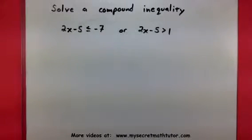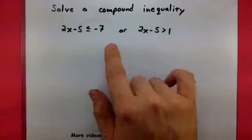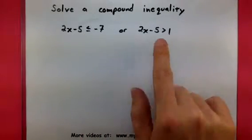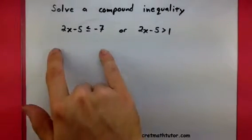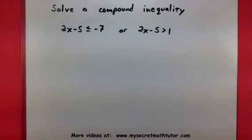Now the process for solving this is not going to look too unusual from solving normal inequalities. Anytime we divide or multiply by a negative number, we're going to make sure that these signs get flipped. And other than that, I'm just basically going to do these separately, and then we'll connect our answer in the end.